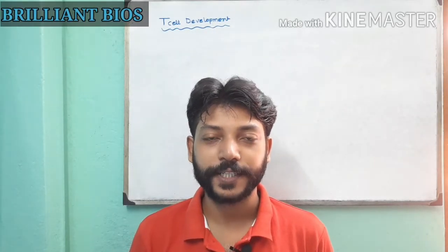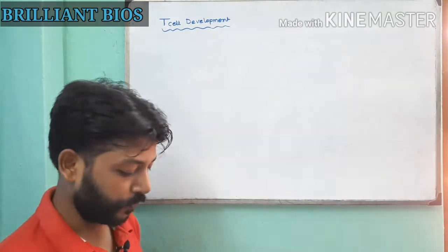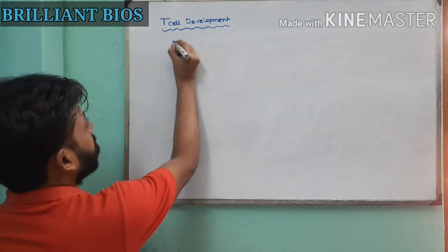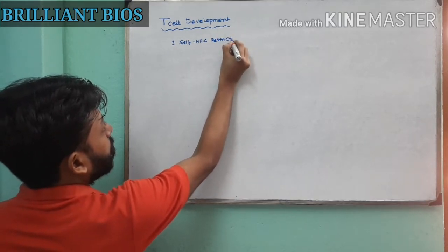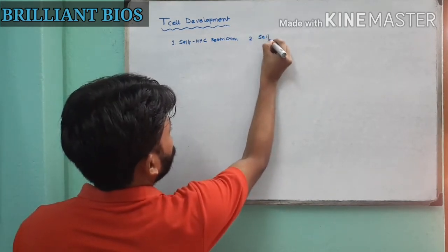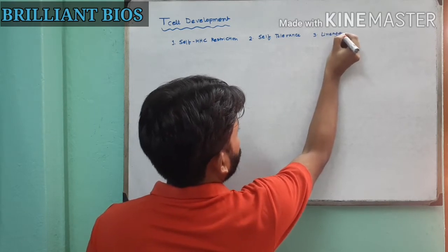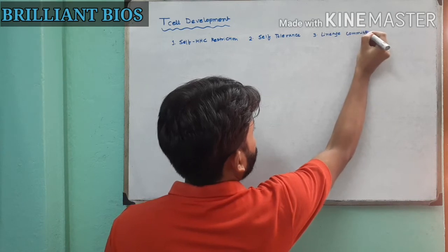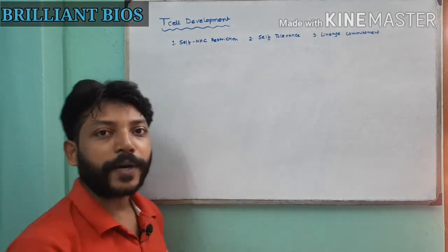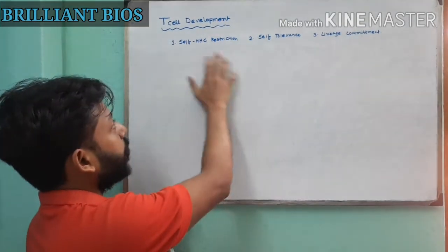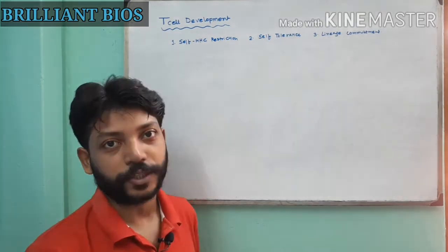Welcome to another tutorial from Brilliant Bags. In this lecture I will talk about T cell development. This is a very important topic so you must watch this video carefully. In the beginning I want to mention three important points: the first is self-MHC restriction, the second is self-tolerance, and the third is lineage commitment.